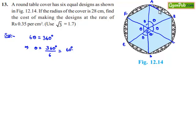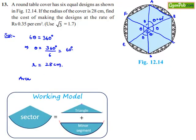Therefore, each chord AB, BC, CD, DE, EF, and FA subtends an angle of 60 degrees at the center, and the radius of the circle is 28 cm. We need to find the designed area. Since all the designed regions are the same, let us find the area of one designed region, that is segment AB.